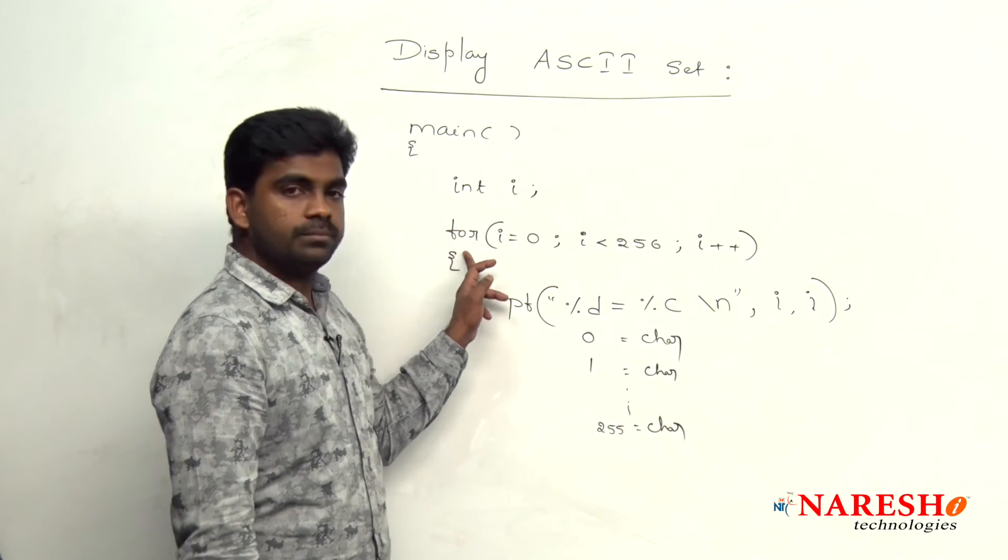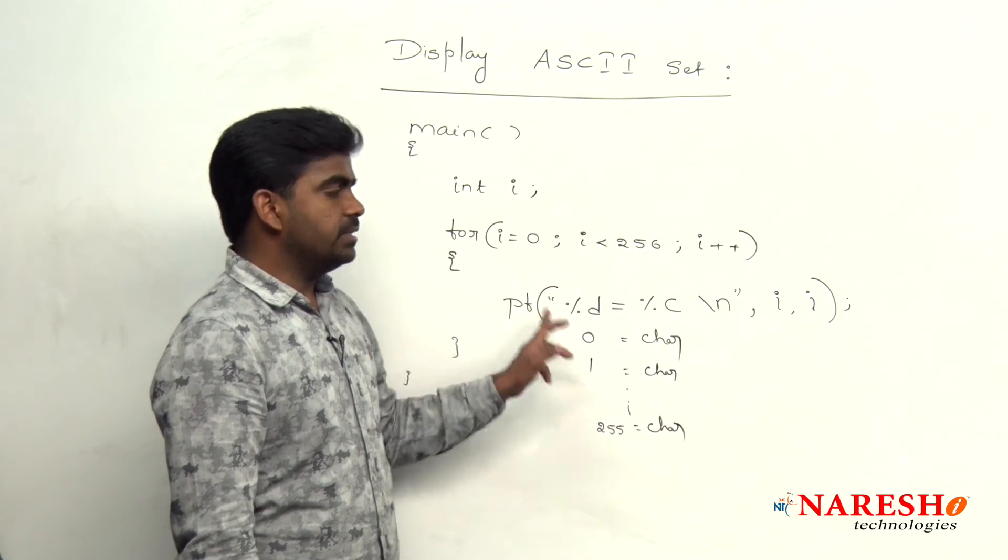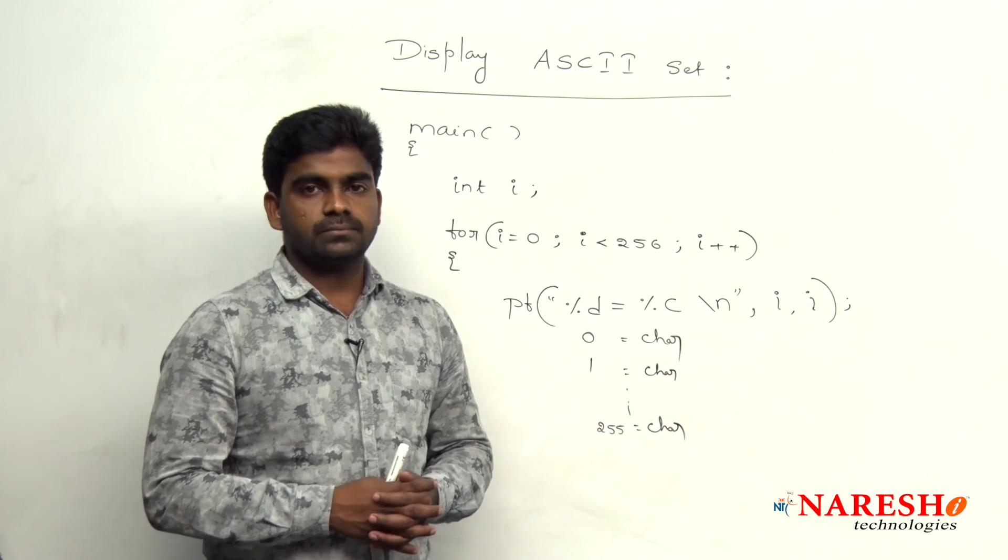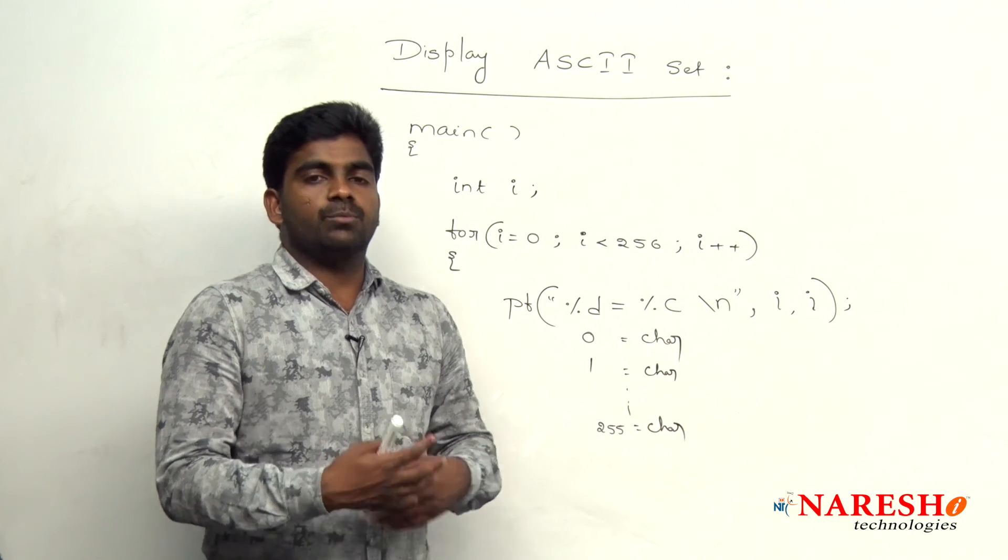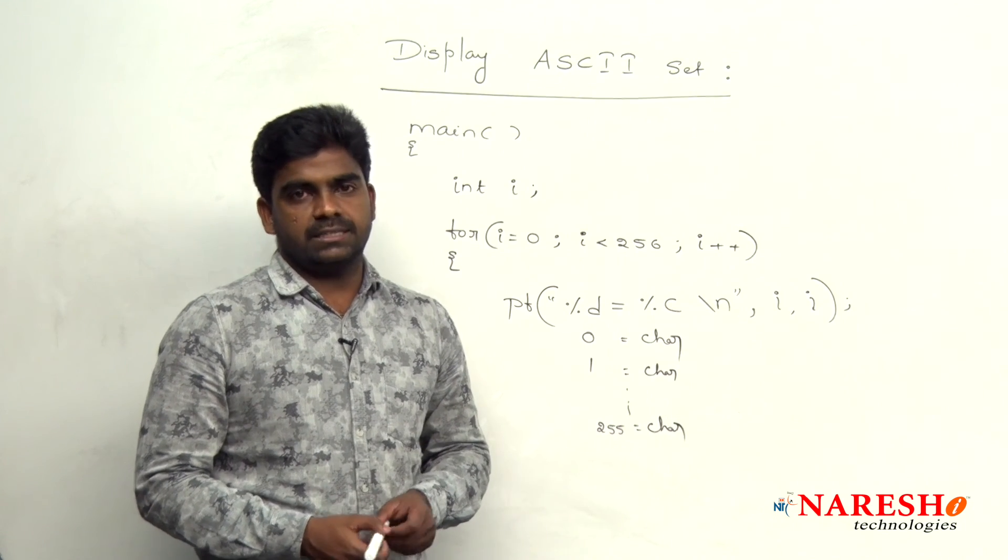Using a for loop, simply we can write that ASCII character set. Hope you understood. For more videos, please subscribe to Narish IT channel. Thank you.